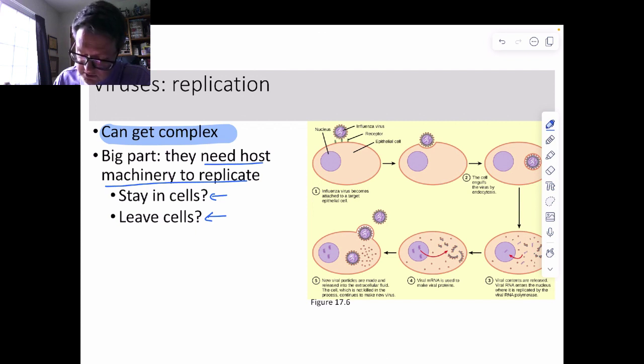If they stay inside the cells, we call this the lysogenic cycle, and they just stick around with you. If they choose to leave the cells, that's what we call the lytic cycle. Not all viruses can do both. Some, if you do the lysogenic cycle, you have the option of going into the lytic cycle. But if you exclusively do the lytic cycle, the lysogenic cycle is not for you.